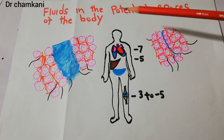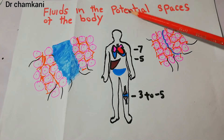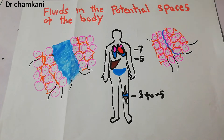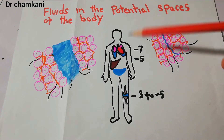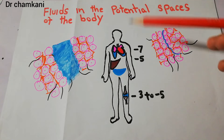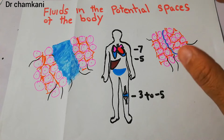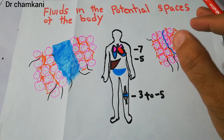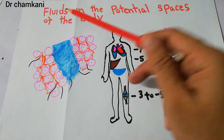These potential spaces have the potential to become a space — that is why they are known as potential spaces. Because normally there is no space between them, but if there is accumulation of fluid, they can become a potential space, and they have the potential to accumulate a lot of fluid.